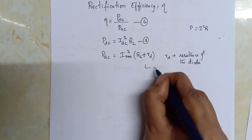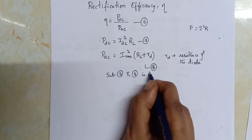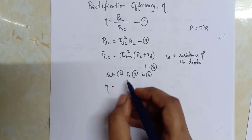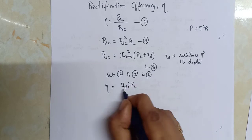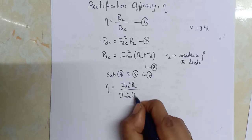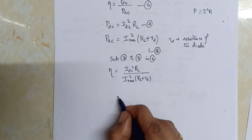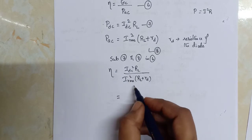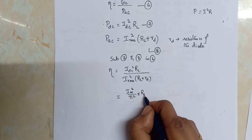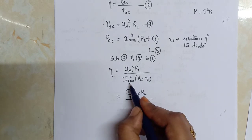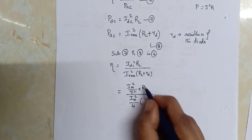Let us take this as equation 8. Substitute 7 and 8 in 6, so we get eta = IDC² × RL / IRMS² × (RL + Rd). We substitute IDC and IRMS values. IDC is IM/π, so we get IM²/π² into RL divided by IRMS value which is IM/2, so we get IM²/4 into RL + Rd.